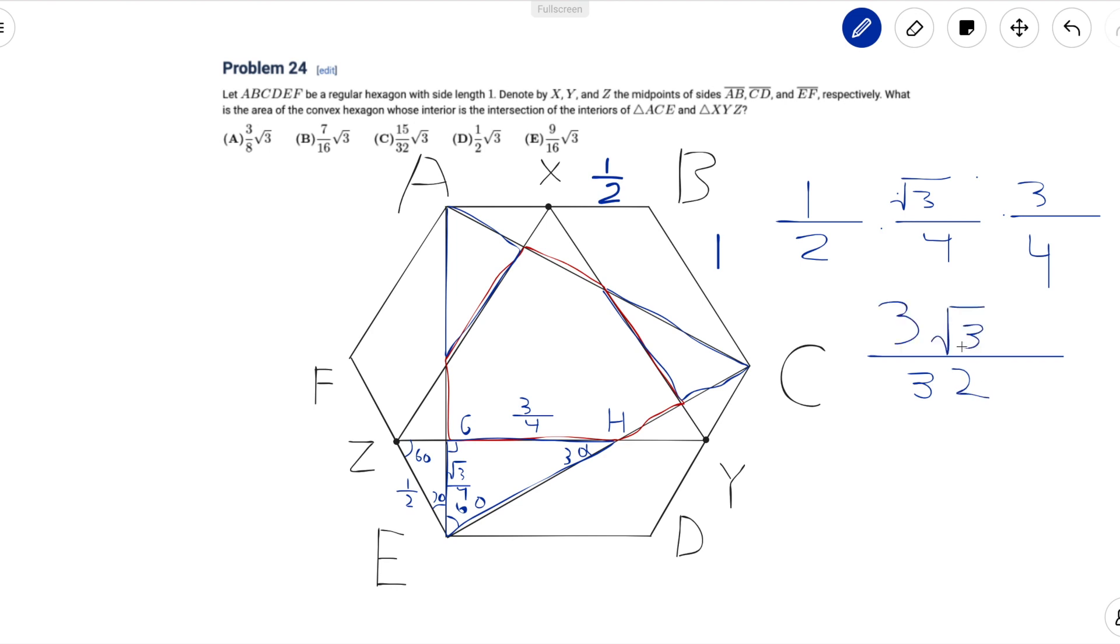By symmetry the areas of the other blue triangles are also the same. So we can just multiply by 3 and get that the total area that we want to cut out is 9 root 3 over 32.